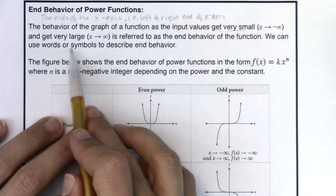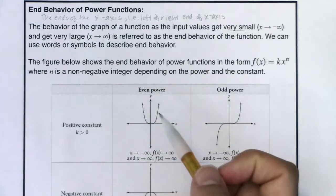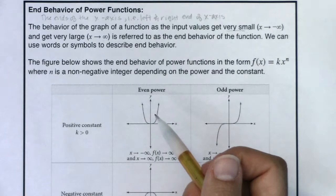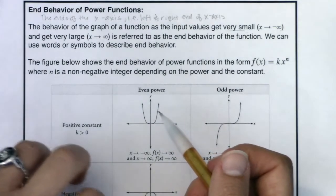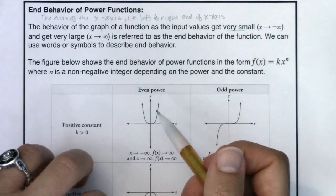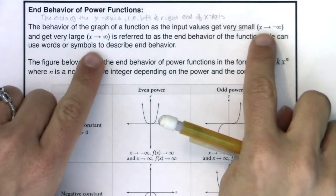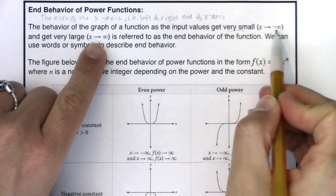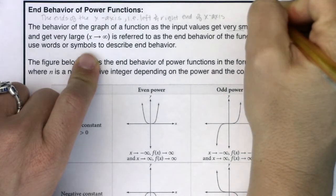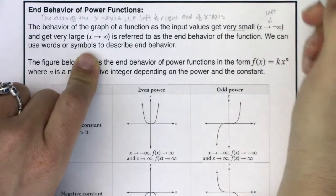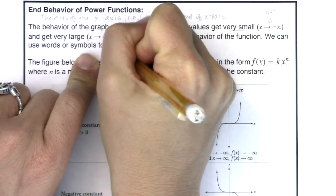We can use words or symbols to describe end behavior. I want to show you the words with arrows, but I also want us to start looking at calculus notation, which uses symbols like x going to negative infinity and x going to positive infinity. X going to negative infinity means I'm headed left, and x going to positive infinity means I'm headed right.